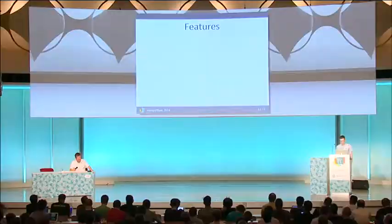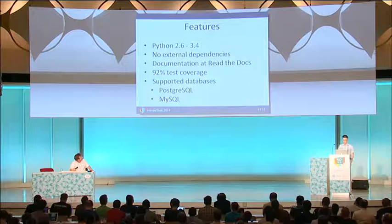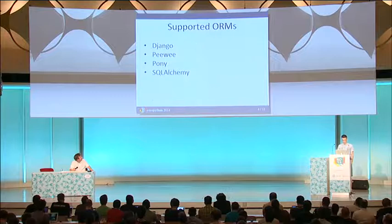Architekt supports Python 2.6 through 3.4. It has absolutely no external dependencies, except for the ORM it will be working with. It has extensive documentation on Read the Docs and 92% test coverage at the moment. Supported databases are PostgreSQL and MySQL, with more coming. Supported ORMs are Django, Peewee, Pony, SQLAlchemy, and SQLObject coming soon.